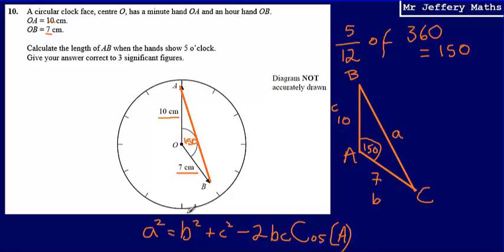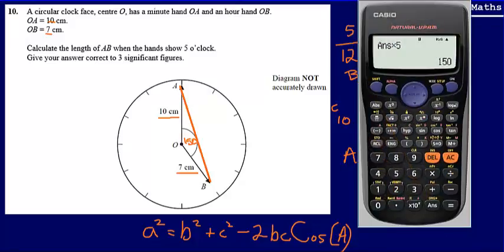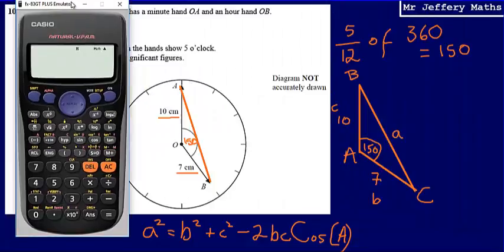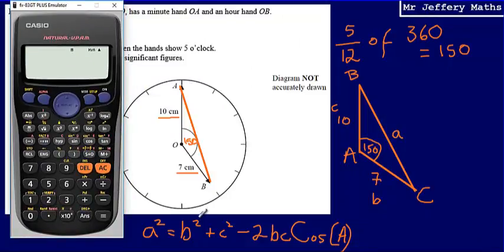So all that's left for us to do is now substitute into this formula. I'm going to get the calculator to do this rather than write it all down. What I'm going to be doing here is just substituting in. So we're saying that this length here that I'm trying to find is going to be b squared, so 7 squared, plus 10 squared, so plus c squared, minus 2 times b, which is 7, times c, which we said was 10, times by the cos of the angle, which is 150 degrees.